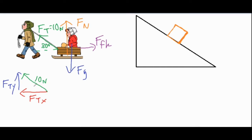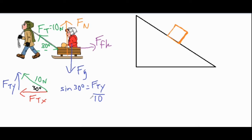We do a little bit of trig with this 30-degree angle, always including the hypotenuse of 10 newtons. For the y component, fty is opposite the angle, so we use sine: sine of 30° = fty / 10 newtons. Multiplying both sides by 10 gives us fty = 5 newtons.